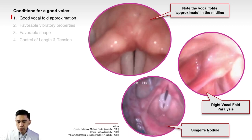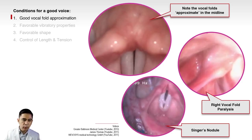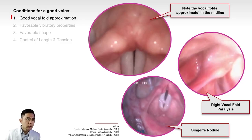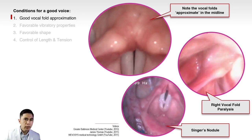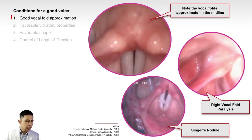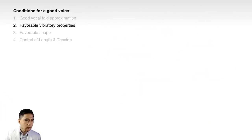A singer's nodule, also called a vocal fold nodule, is the most common problem in singers, teachers, and other professional voice users. It is caused by chronic abuse and misuse of the voice. It is very important to teach professional voice users good speaking techniques to prevent hoarseness in their careers.